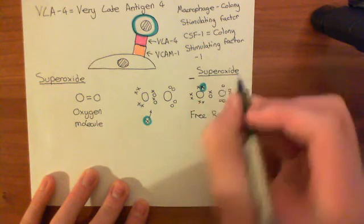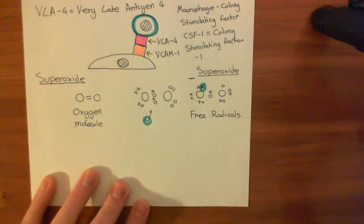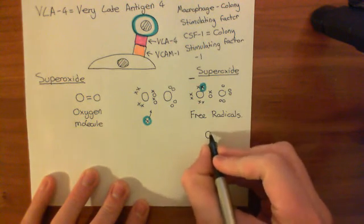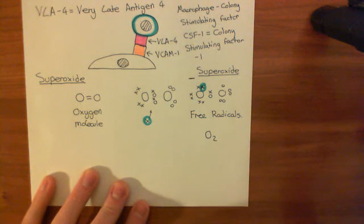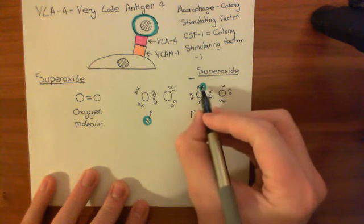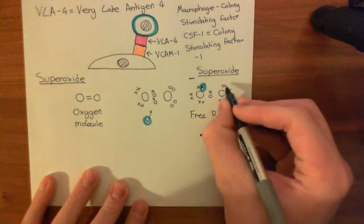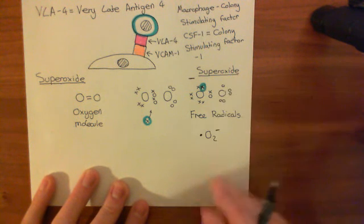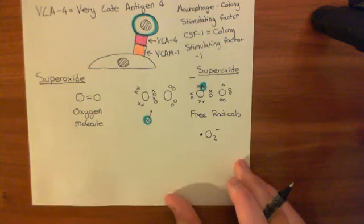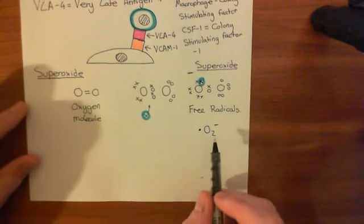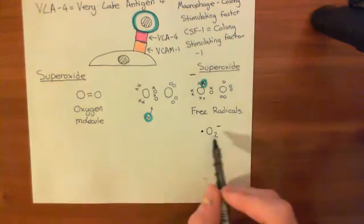So superoxide. And the way you would denote it symbolically is it's still O2, because you've still got two oxygen atoms bound together. But you'd put a negative charge up there to denote this negative charge on one of the atoms. And you'd put a dot here to denote the free radical, the unpaired electron on this oxygen atom. So that's how superoxide is usually denoted. Dot O2 minus, like that.